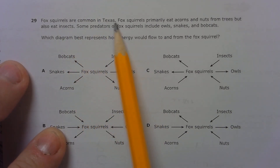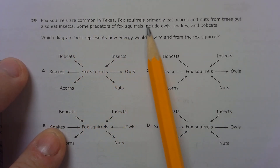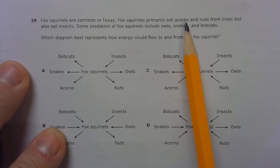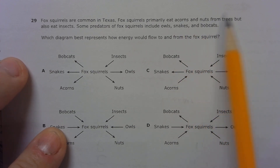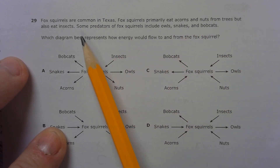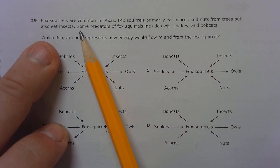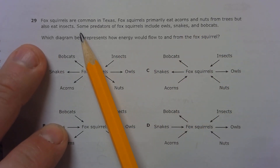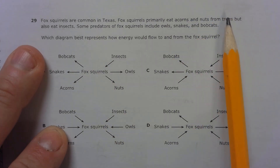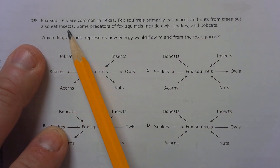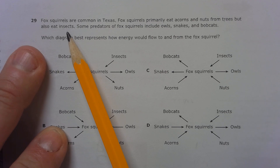Fox squirrels are common in Texas. Fox squirrels primarily eat acorns and nuts from trees, but also eat insects. So that means they're an omnivore — plants and animals. So they're an omnivore, which means they're a secondary consumer.